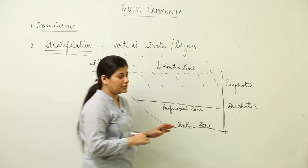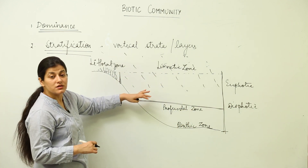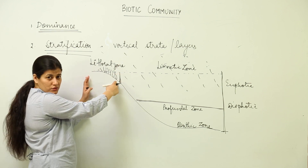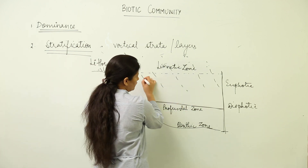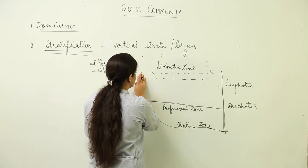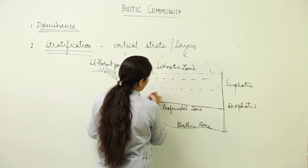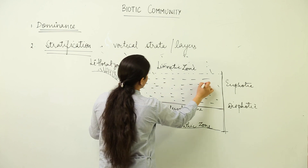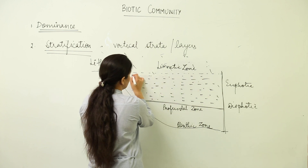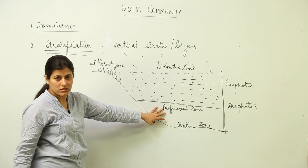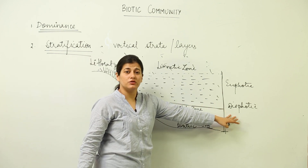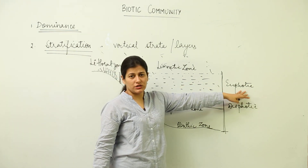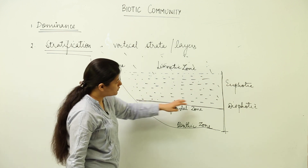We are considering this stratification in terms of producers. In the surface and limnetic zone, plant growth is abundant because it is fully illuminated. The euphotic area has abundant light — light penetrates through and extends into this zone. In the dysphotic area, light penetration becomes lesser and a twilight-like situation is persistent. Producers in the dysphotic zone are not able to reach the compensation point in terms of light.